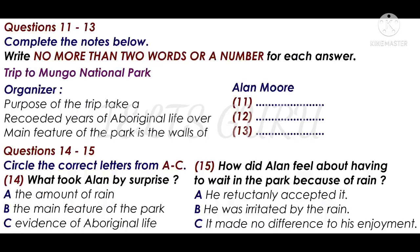Why did you choose this location? It holds a record of aboriginal life stretching back over 40,000 years. And of course, I wanted my young kids to be amazed by the main feature of the park — the remarkable Walls of China, as they're called — where wind and water erosion have exposed this long history.